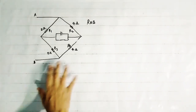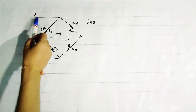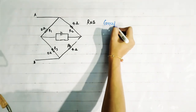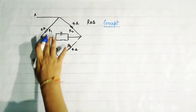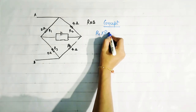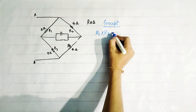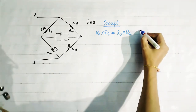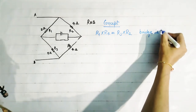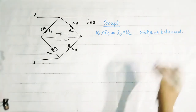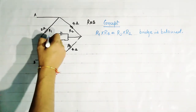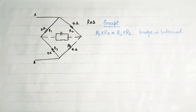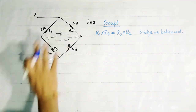Now see this question. In this question a circuit is given and we have to find the equivalent resistance between A and B. Here we will use a concept: when the product R1 × R4 equals R3 × R2, the bridge is balanced. When the bridge is balanced, there is no current through that branch, so that branch is of no use and we can treat it as an open circuit.